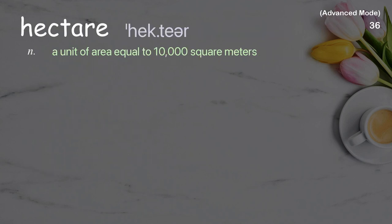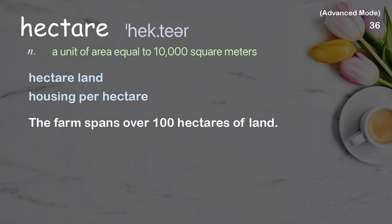Hectare: A unit of area equal to 10,000 square meters. Examples: hectare land, housing per hectare. The farm spans over 100 hectares of land.